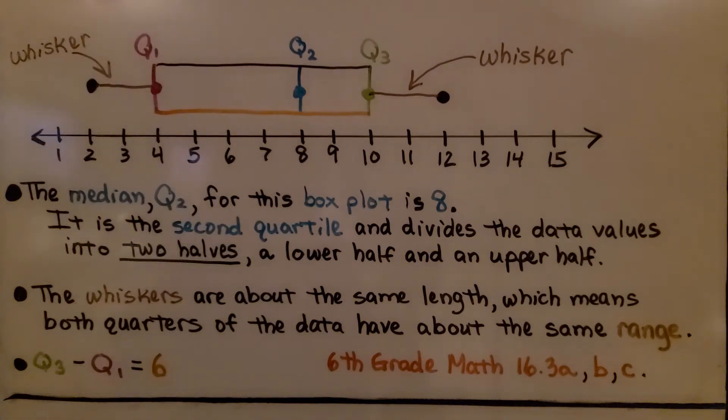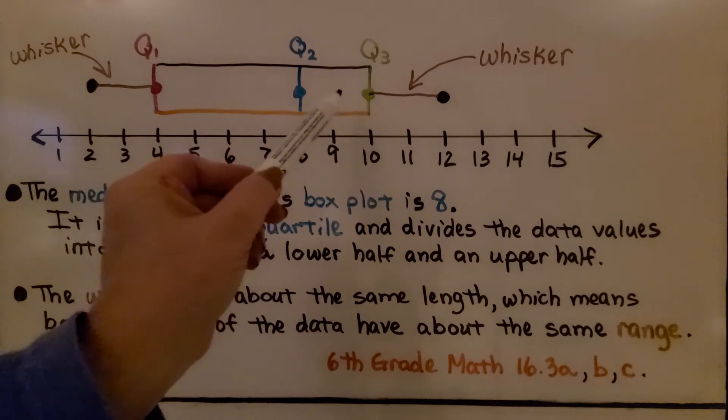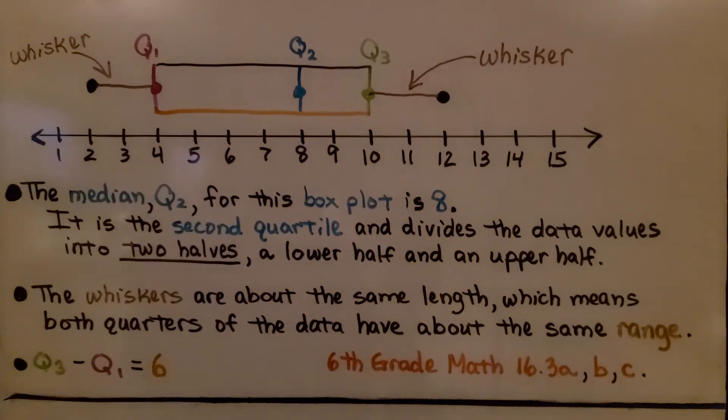It's the second quartile and divides the data values into two halves, a lower half and an upper half. The whiskers are about the same length, which means both quarters of the data have about the same range.